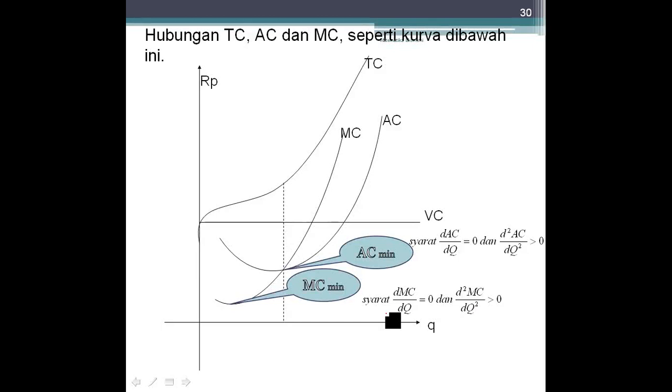Seperti ini, ini syarat MC minimum, syarat AC minimum. Nanti disoal biasanya kayak gini, MC minimum turunan pertamanya 0 dan turunan keduanya lebih besar dari 0. AC minimum juga turunan pertama 0, turunan kedua lebih besar dari 0.